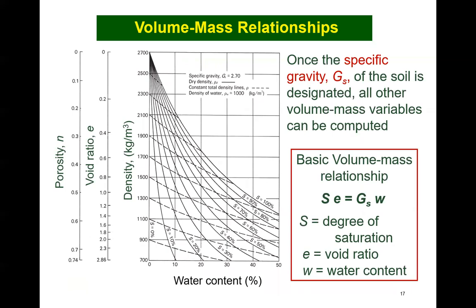Once the specific gravity of a soil is fixed, the most commonly used volume and mass relations can be shown on a single plot of volume variables versus gravimetric water content. The saturated soil falls along a single line with degree of saturation equal to 100% — the only line of interest in saturated soil mechanics. Also shown is the useful basic volume-mass relationship relating degree of saturation, void ratio, and gravimetric water content.